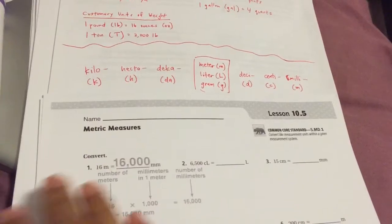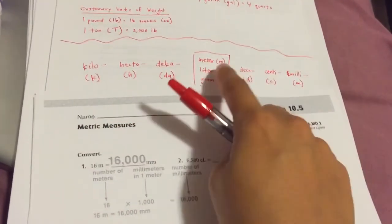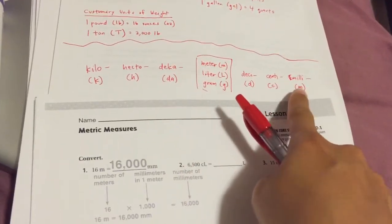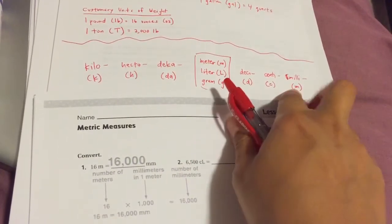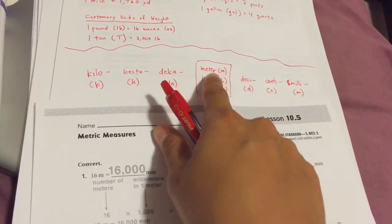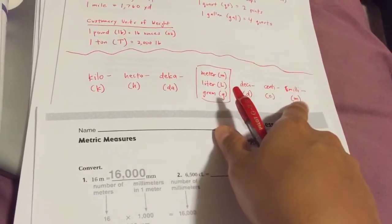If you ever see the letter M by itself, it's going to stand for meter, not milli. Because in order for us to use this one, you're going to need one of the ones in the box. If you ever just see a regular M, it's referring to meter, not milli.